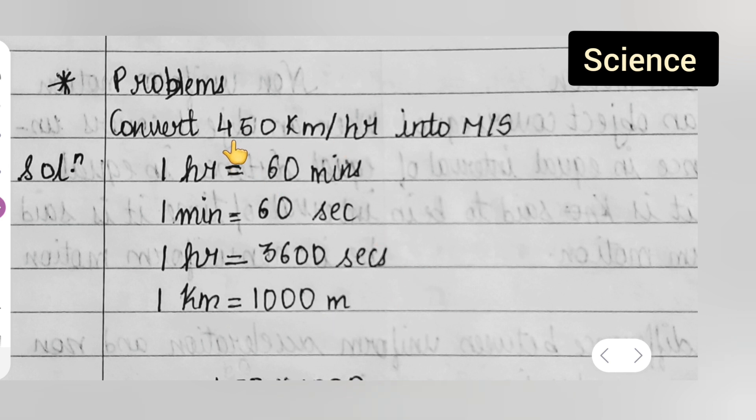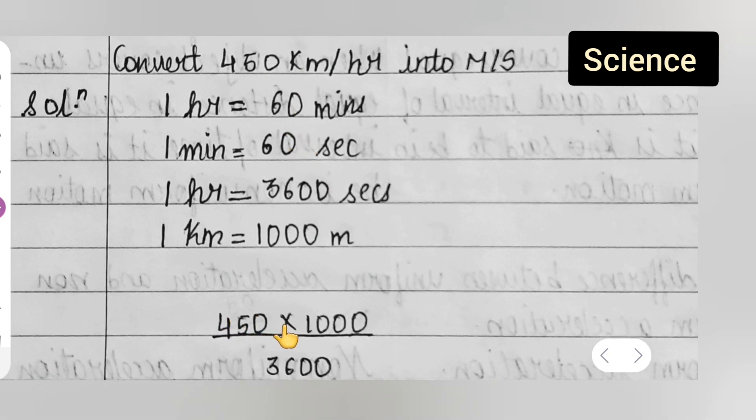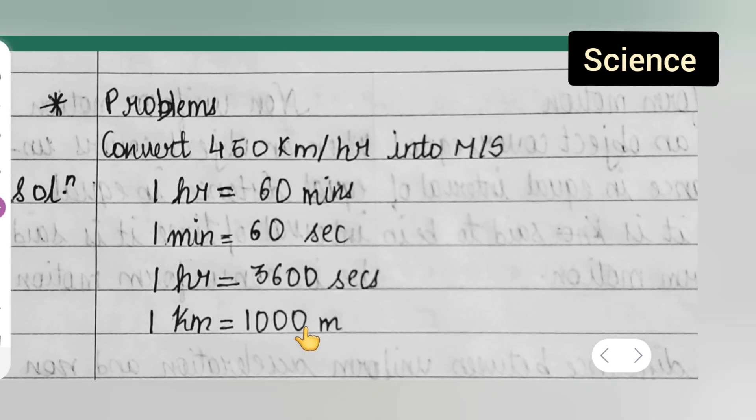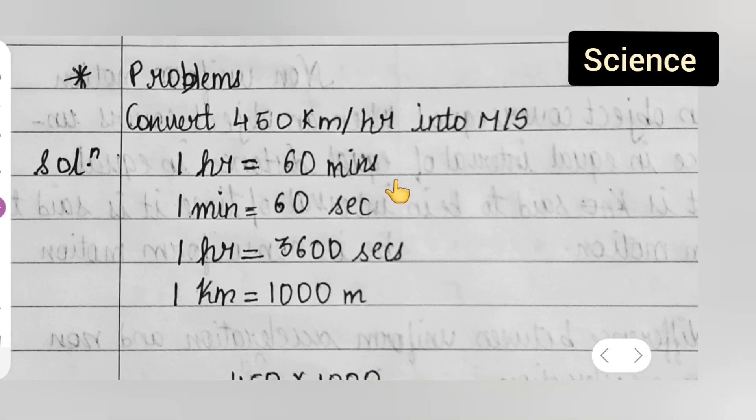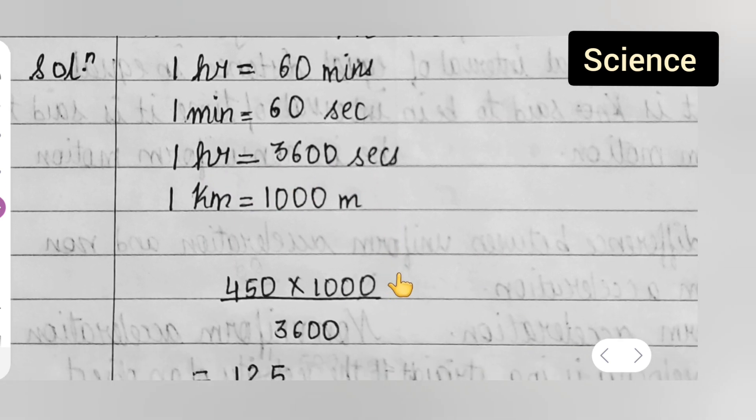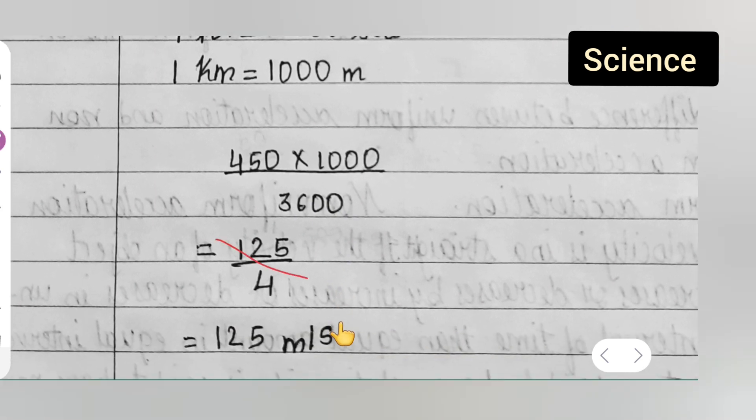What we will have to do is, 450, plug the value, it is 450 over here. Multiply it with 1000 because 1 kilometer is given as 1000 meter, so multiply by 1000. Upon hour is there, hour is 3600 seconds, so plug that value 3600 over here.